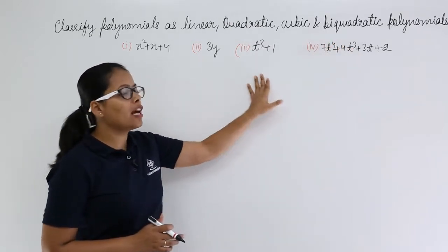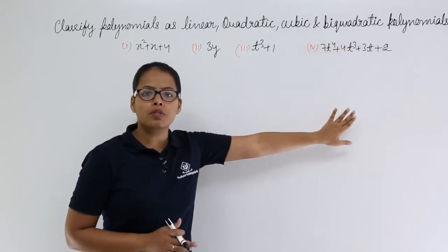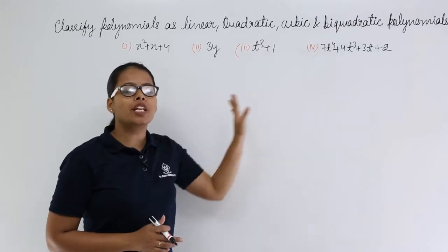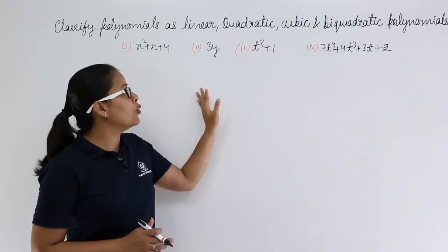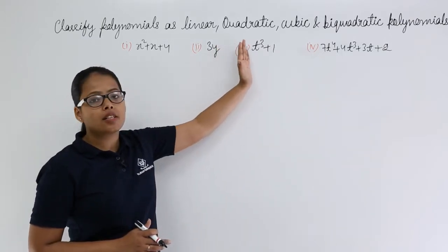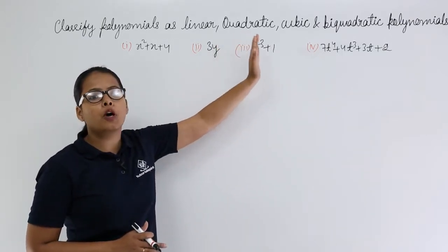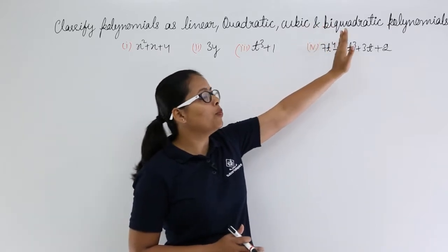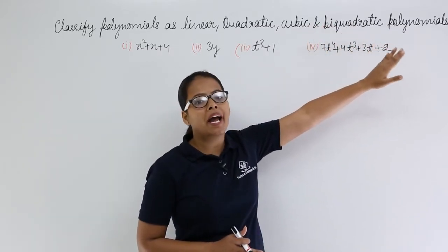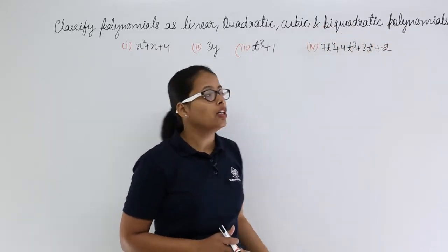So you can see here there are four problems and you need to identify which polynomial is linear, which polynomial is quadratic, cubic or bi-quadratic.